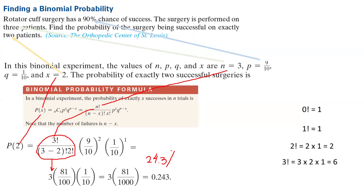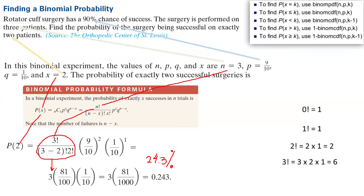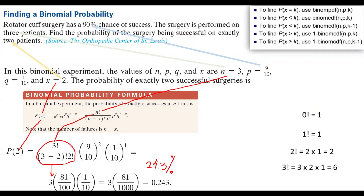So the probability of success in exactly two surgeries is 24.3%, which is relatively low. Now, how do we use the calculator? Remember, this was the classical method. To use your calculator, you need to use binomial PDF, because you are finding a probability for exactly a specific value of K. Let me share the screen and show you.